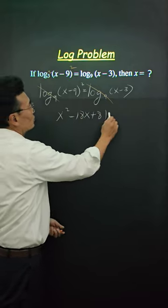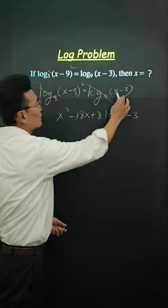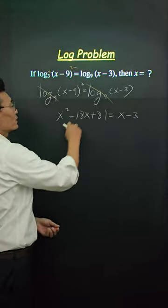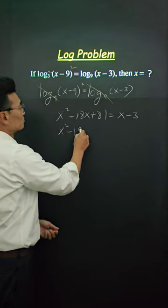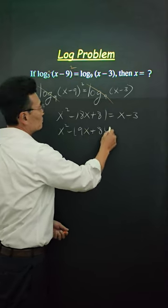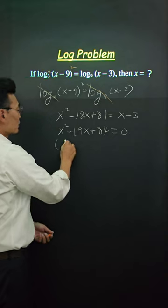If I multiply this out, which is equal to x minus 3. Then bring everything to the left side, factor it to solve for x.